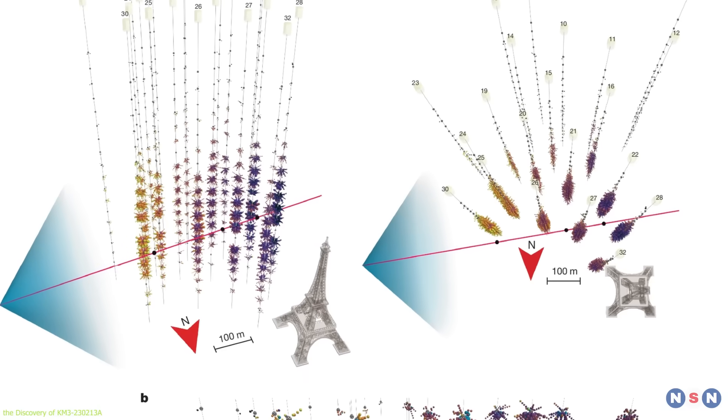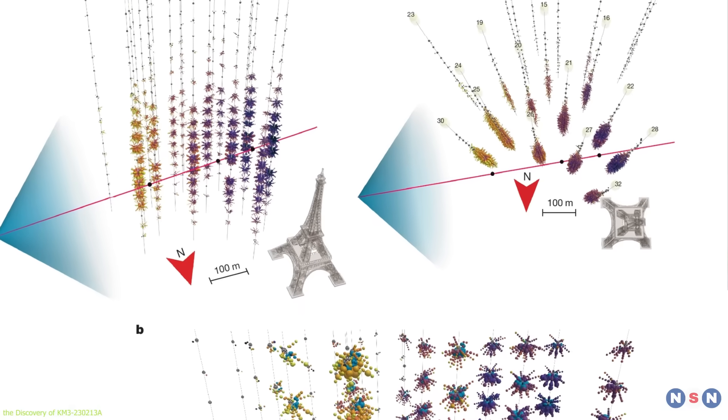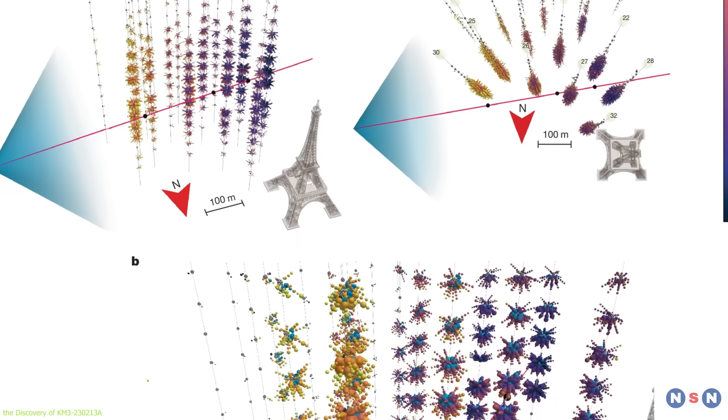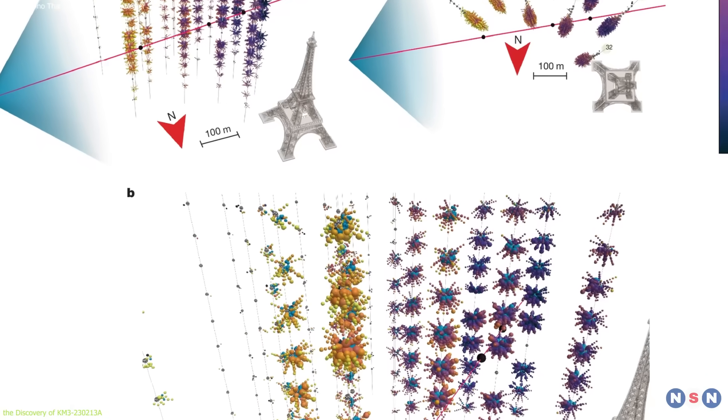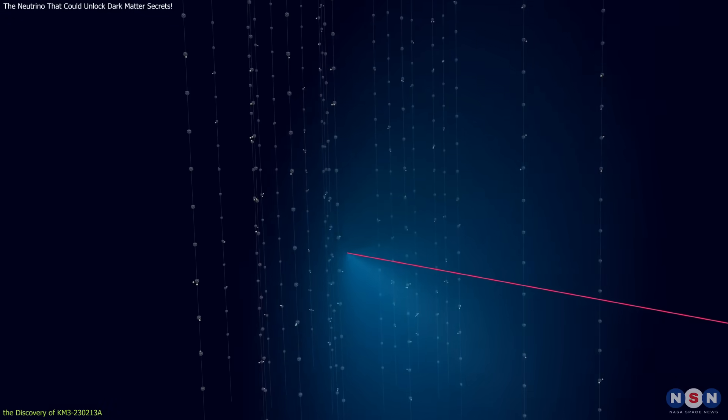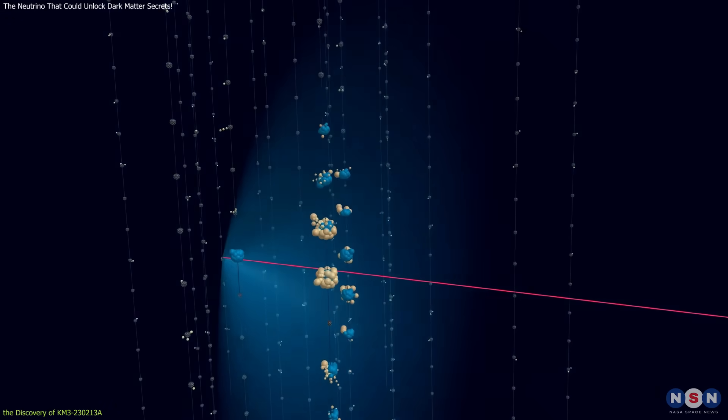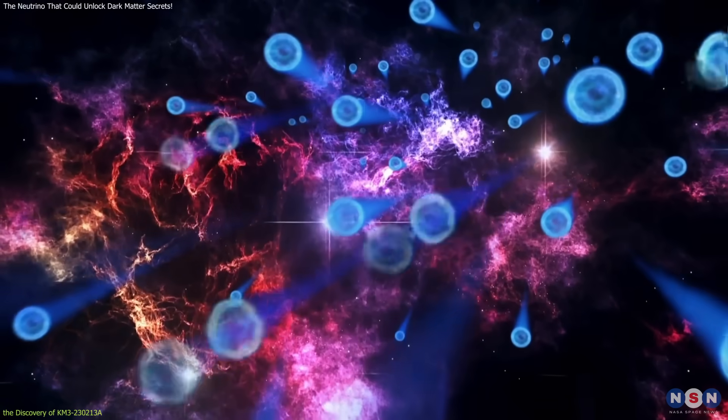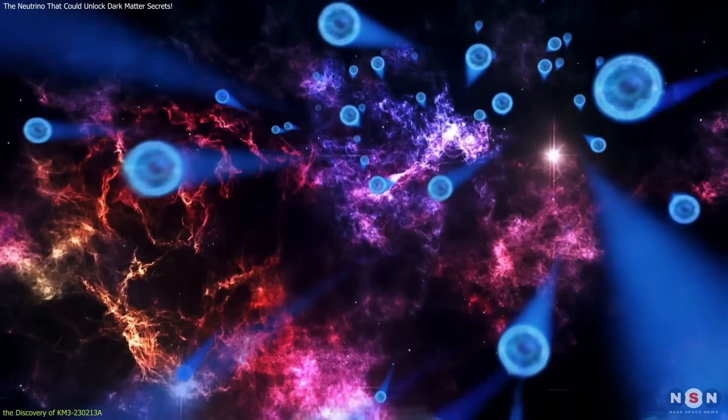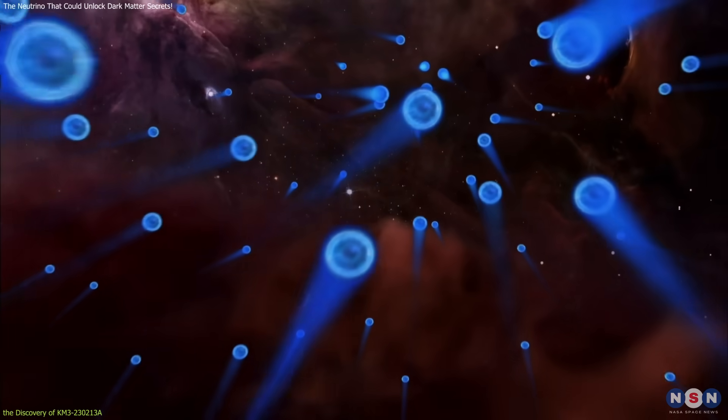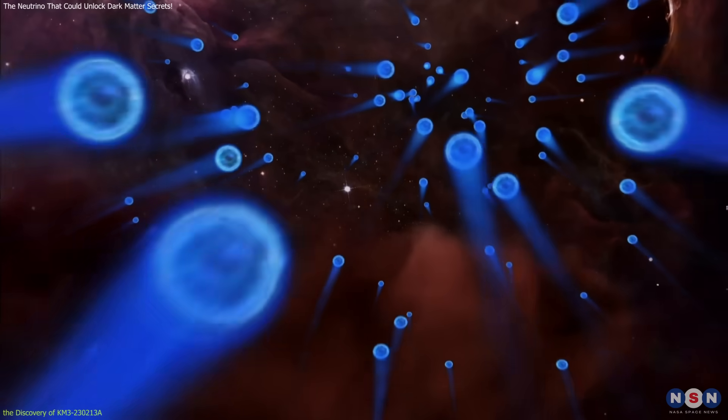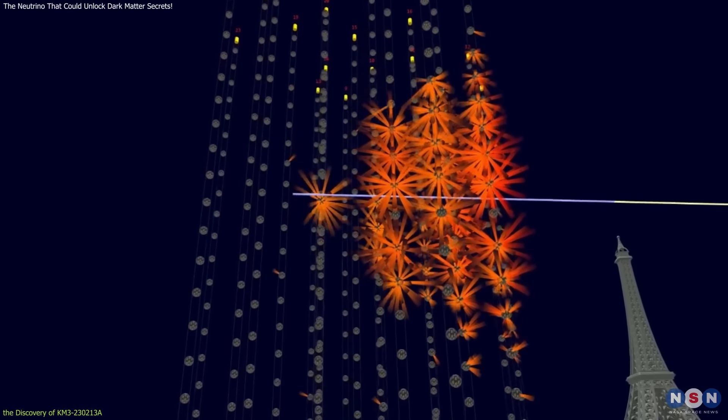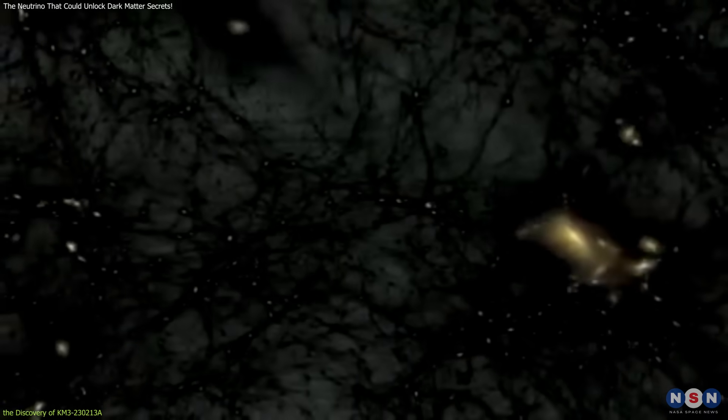The most striking feature of KM3-230213A, aside from its energy level, was its trajectory. The neutrino seems to have traveled a near-horizontal path, which suggests it came from a distant astrophysical source. This is important because it points to the possibility that this particle is not just another background event, but could be a signal of something much more profound, such as the interactions of dark matter.